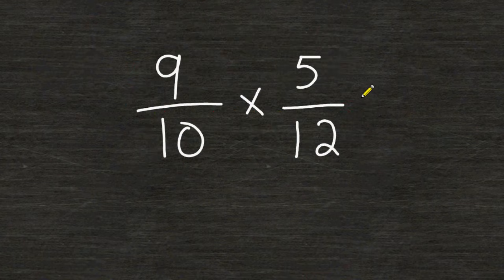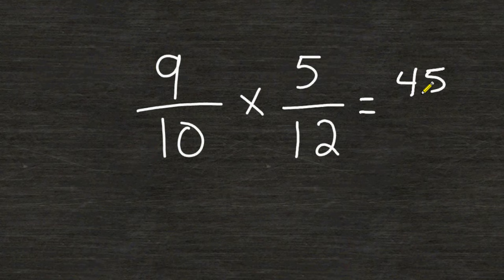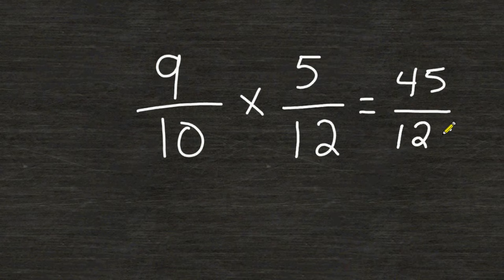When multiplying two fractions together, it is possible just to take the numerators and multiply those together to get your numerator. In this case, 9 times 5 is 45, and then multiply your denominators together to get your denominator, and 10 times 12 is 120, and then you can take that resulting fraction and reduce to lowest terms.